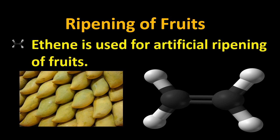Ethene is used for artificial ripening of fruits. Ripening means the fruits become more soft and more colored — fully nourished. Whenever we put an unripened banana with ripened apples, the ripened apples release Ethene and Carbon dioxide, and that Ethene and Carbon dioxide will also ripen the unripened banana.